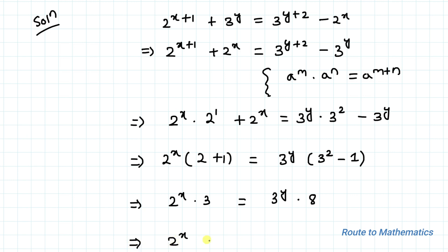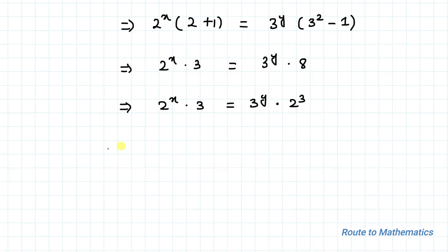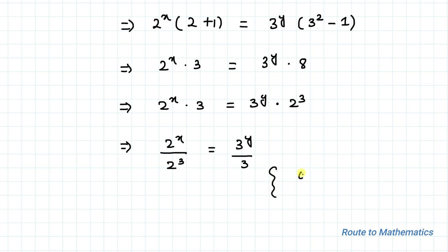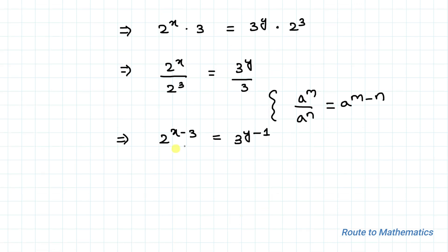Since 8 can be written as 2 to the power 3, by cross multiplication we can write 2 to the power x divided by 2 to the power 3, equals 3 to the power y divided by 3. We have the exponential rule: a to the power m divided by a to the power n equals a to the power m minus n. Applying this rule, we get 2 to the power (x minus 3) equals 3 to the power (y minus 1).